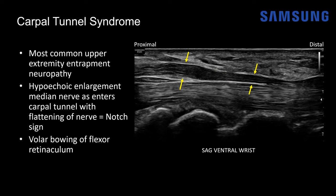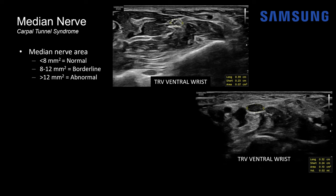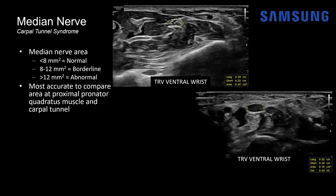You might also see volar bowing of the flexor retinaculum on transverse images. The median nerve area can also be evaluated — normally less than 8 mm², 8–12 mm² is borderline, and greater than 12 mm² is typically abnormal. A more accurate assessment is to compare the difference in median nerve area from proximal to distal — specifically at the level of the pronator quadratus muscle and at the carpal tunnel. Studies have shown that an increase of 2 mm² or more as you move from proximal to distal is 100% specific for carpal tunnel syndrome.